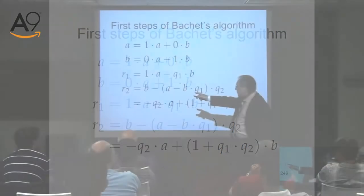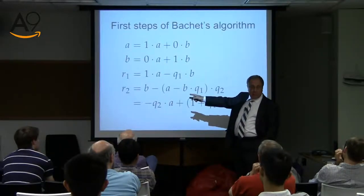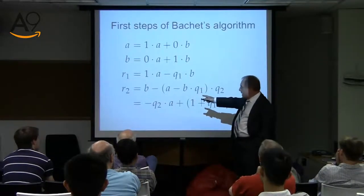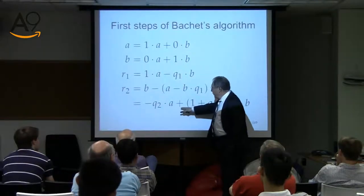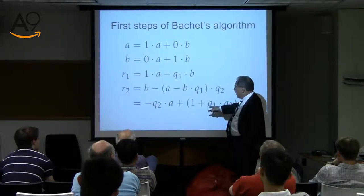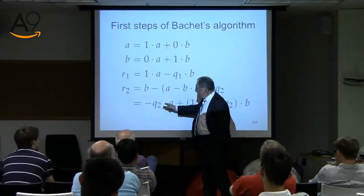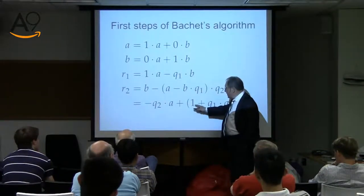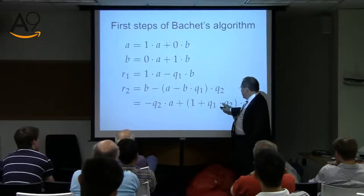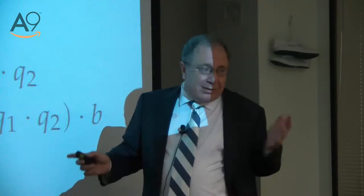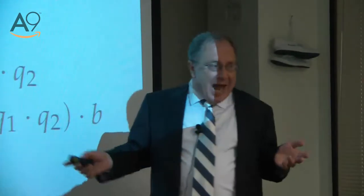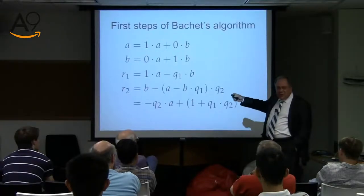Then we could do the second remainder. Do you see what we could do for the second remainder? We just plug it in. We rearrange it. It gets minus Q2 times A, plus 1 plus Q1 times Q2, times B. It's simple algebra, not abstract algebra. It's trivial.